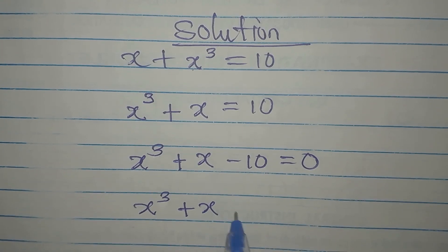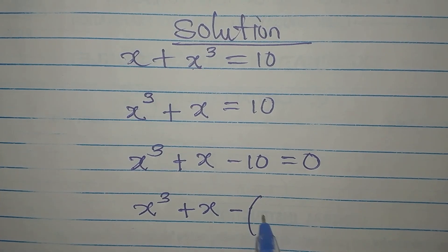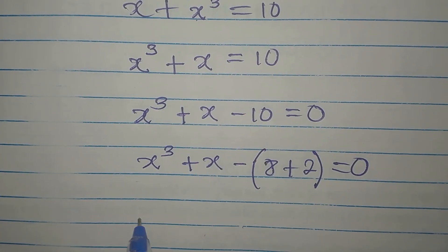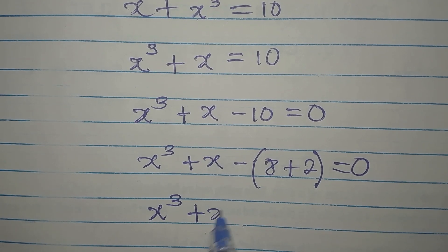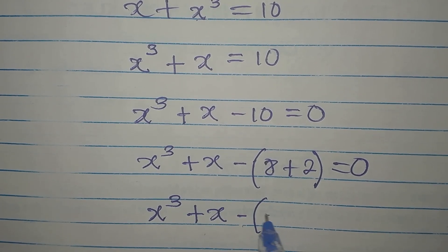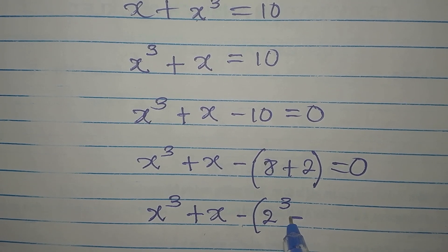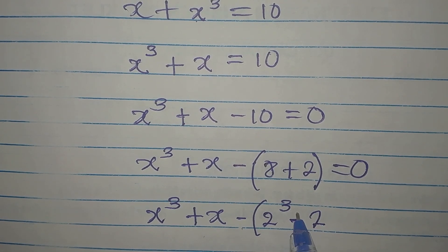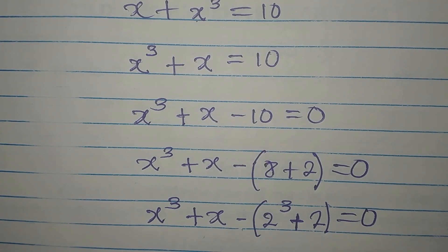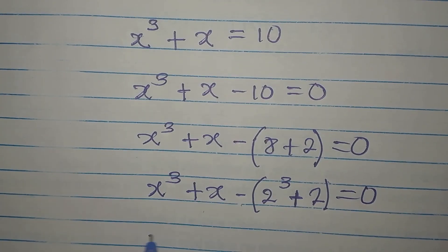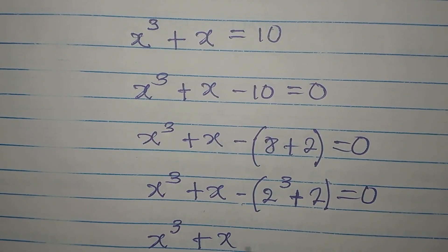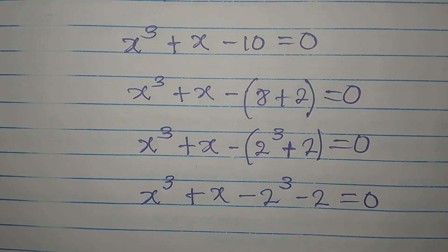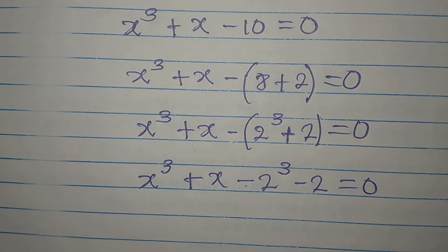We can break this down by noting that 10 can be written as 8 + 2, so X³ + X - 10 equals X³ + X - (8 + 2) = 0. Going further, we write this as X³ + X - (2³ + 2) = 0. Opening the bracket, we get X³ + X - 2³ - 2 = 0.